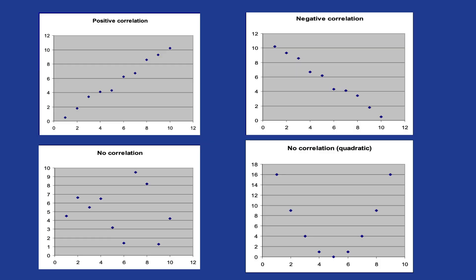So here you can see some examples of a positive and negative correlation and also of no correlation. Remember that you need to have a linear pattern because if you have a quadratic pattern or different patterns, that is not a correlation.